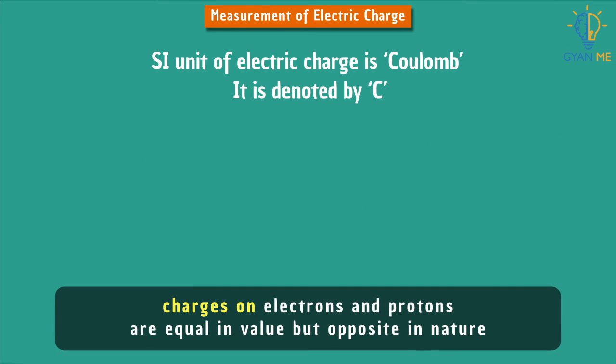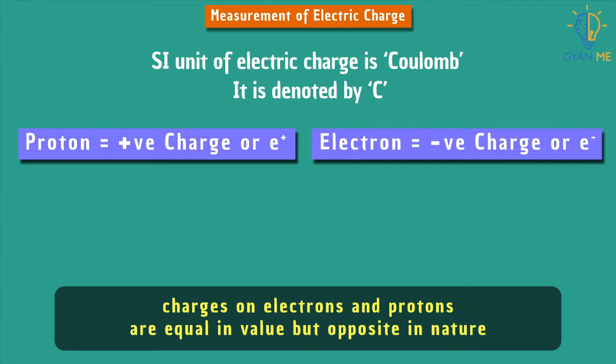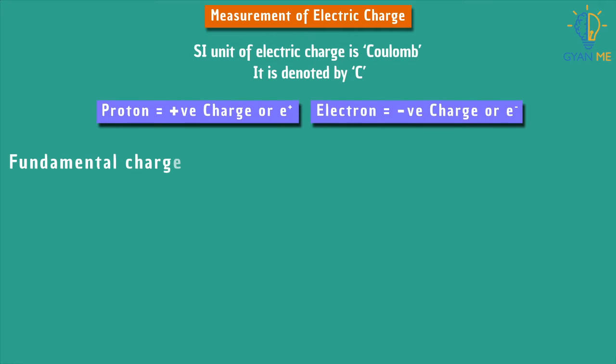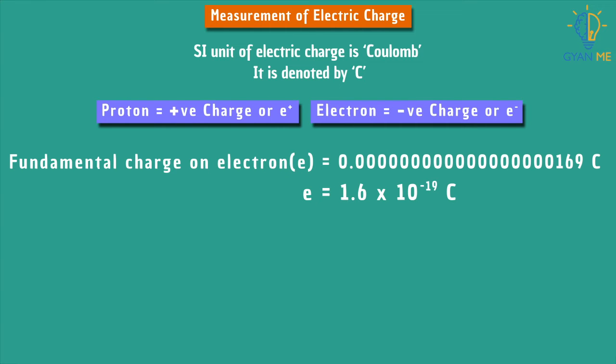Students, you know that charges on electrons and protons are equal in value but opposite in nature. That is, protons have positive charge, represented as e+, and electrons have negative charge, represented as e-. The fundamental charge on an electron is numerically of very tiny value, equal to 1.6 × 10^-19 coulomb.